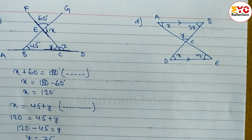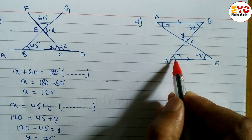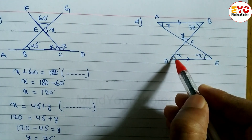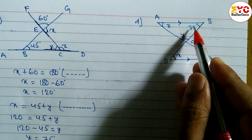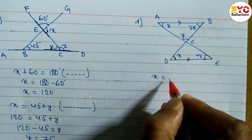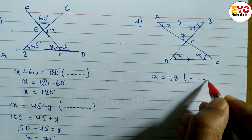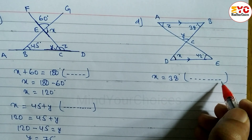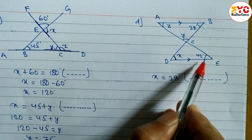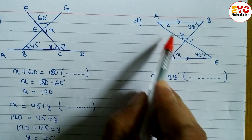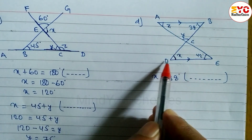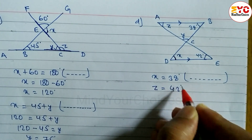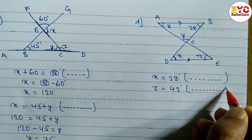Now look at question number D — it's very simple. To find out the value of x, you can see here these two lines are parallel. If parallel, easily we can find out the value of x. X is equal to 38 degrees — reason: being alternate angles. Similarly to find out z: z is equal to 42 degrees — reason: being alternate angles. You can see this is in the form of Z.